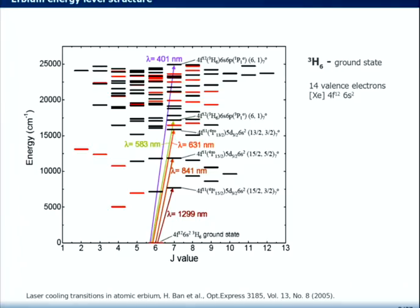So, if you look at the energy spectrum, this looks quite complicated. But, as pointed out in earlier experiments, one can identify several laser cooling transitions that can be used. I will concentrate on the blue one, the 401 nanometer transition, and the yellow, 583 nanometer transition, that we use in our experiment. The atom is in a 3H6 ground state, and we have this submerged shell electron configuration, as Svetlana pointed out. So, we have 12 4f electrons and 2 6s electrons on the outer shell.